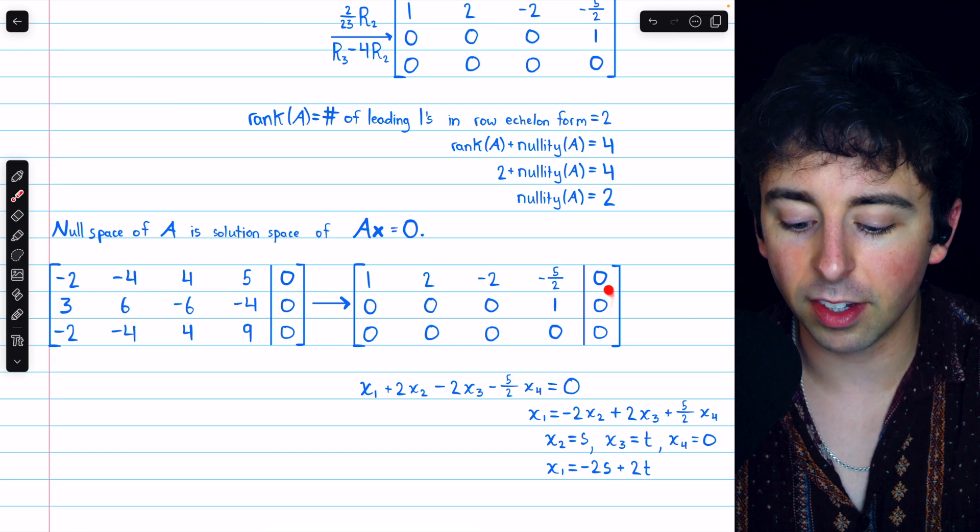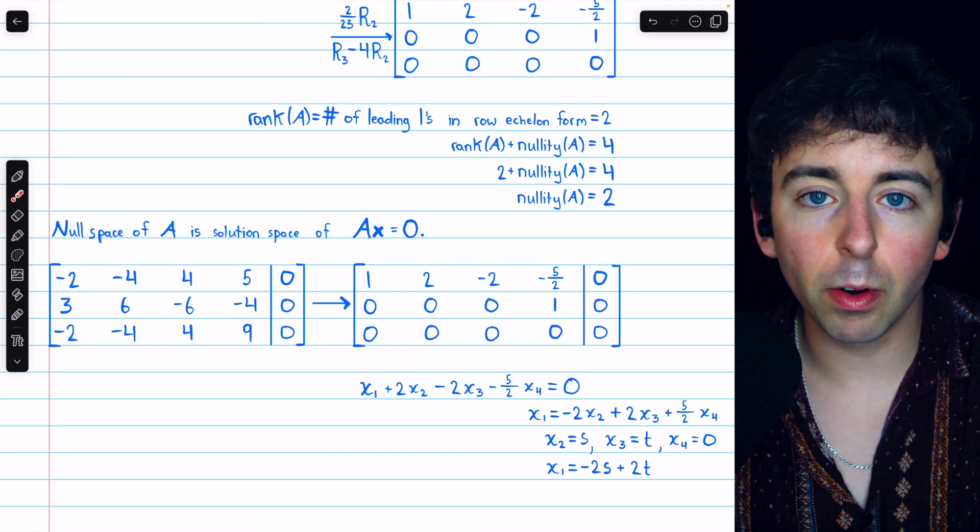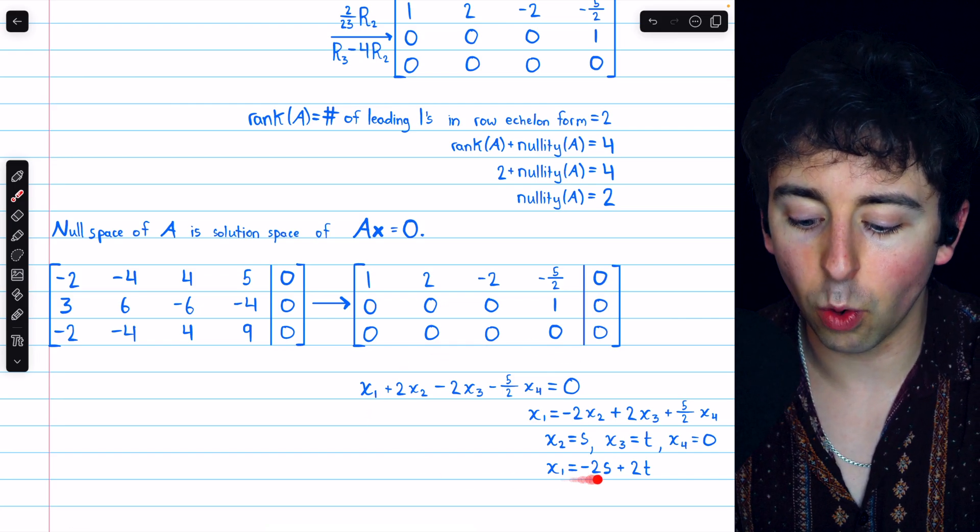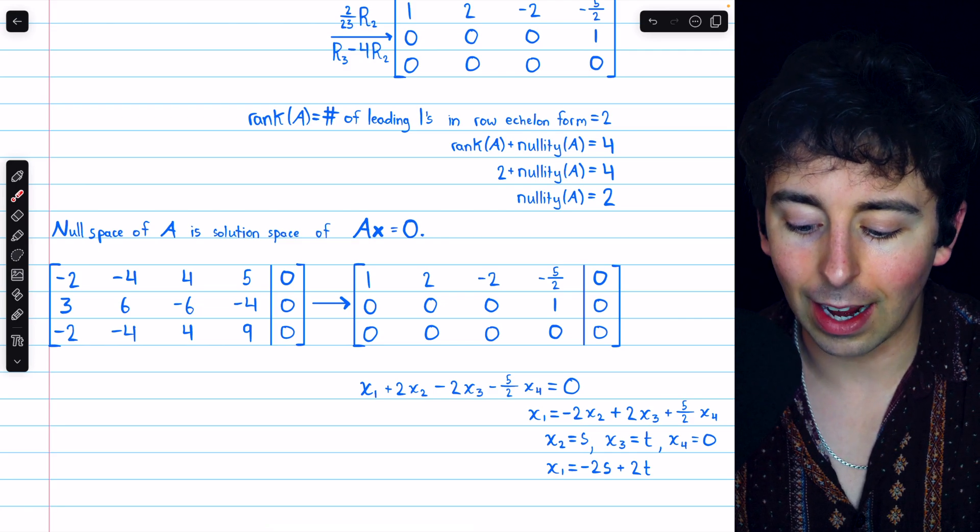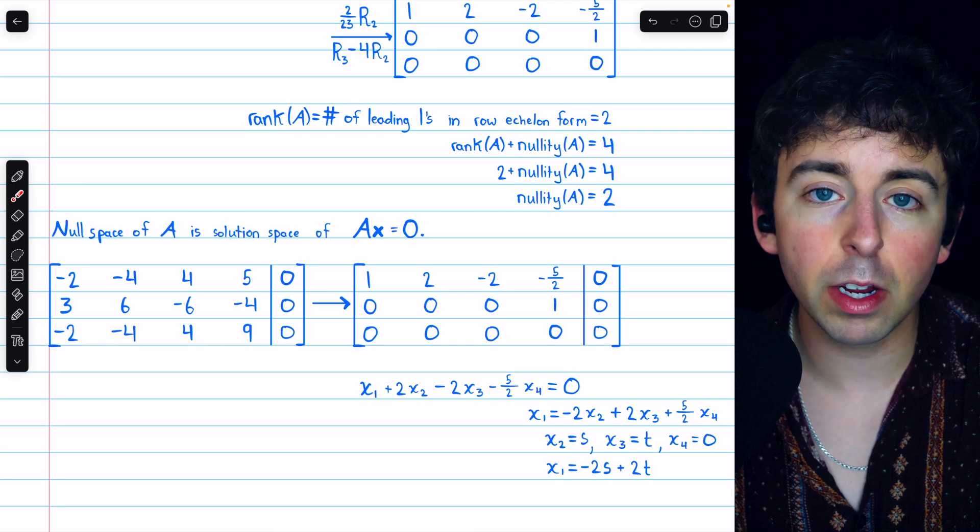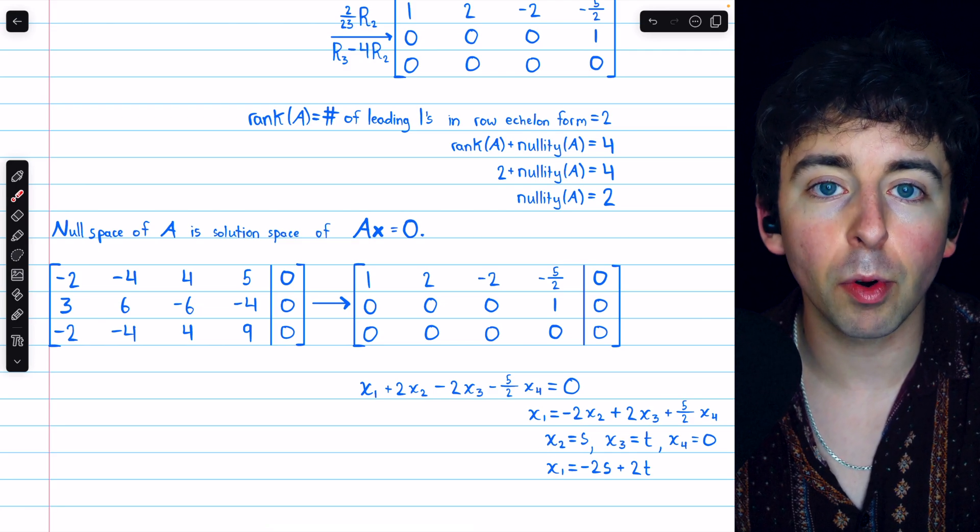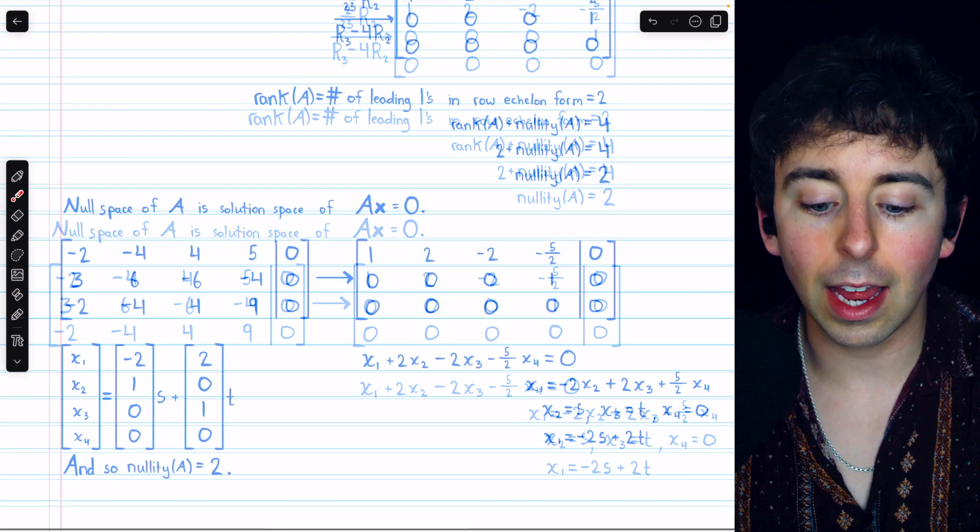Then, we convert the rows into these equations, noticing that x2 and x3 are free variables, and so we may parameterize them as s and t.